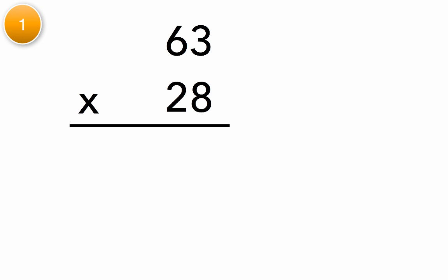Let's begin with long multiplication. Let's do 63 times 28. Start by multiplying in the ones column. 8 times 3 is 24. Put down the 4, carry the 2.